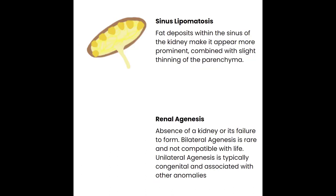Sinus lipomatosis is seen when there are extra fat deposits within the sinus. Remember the sinus is already made up of fatty fibrous tissue — in sinus lipomatosis there is simply extra fat, causing the sinus to appear to take up more of the kidney and making the cortex appear very thin. It will be very echogenic on ultrasound because fat appears more echogenic, and the sinus will appear to take up much more of the kidney than expected. For most people this is just fine — the kidney doesn't function any differently — which is why it is considered a renal variant.